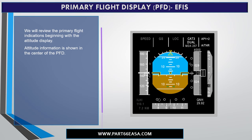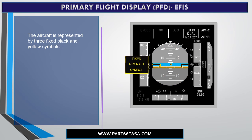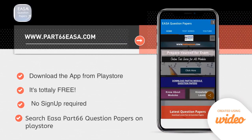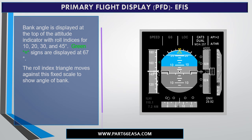Attitude information is shown in the center of the PFD. The aircraft is represented by three fixed black and yellow symbols. There is a graduated pitch scale above and below the horizon line. Bank angle is displayed at the top of the attitude indicator with little tick marks at the 10, 20, 30, and 45 degree marks. Green equal signs are displayed at 67 degrees. The roll index triangle, the little yellow triangle at the top of the blue field that you see here, moves against this fixed scale to show angle of bank.